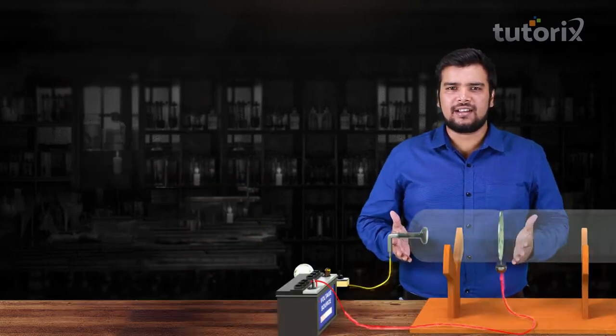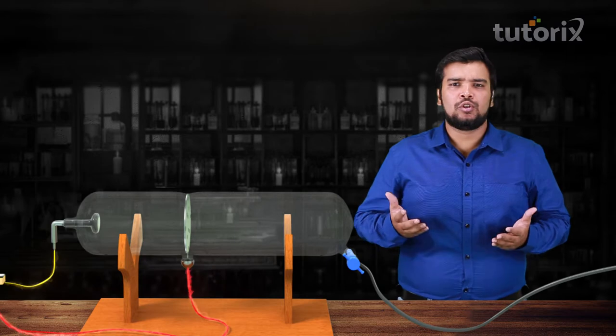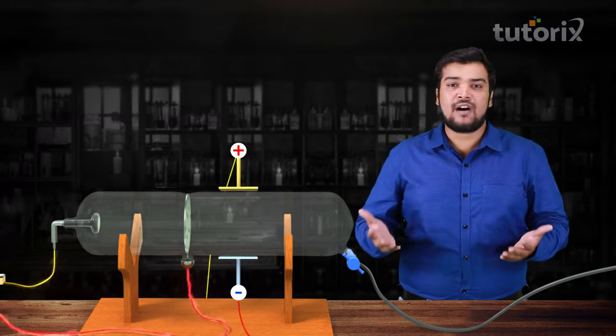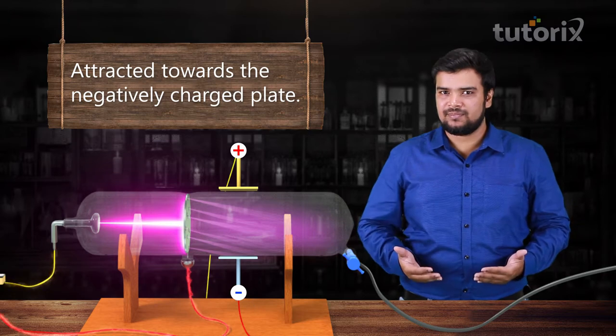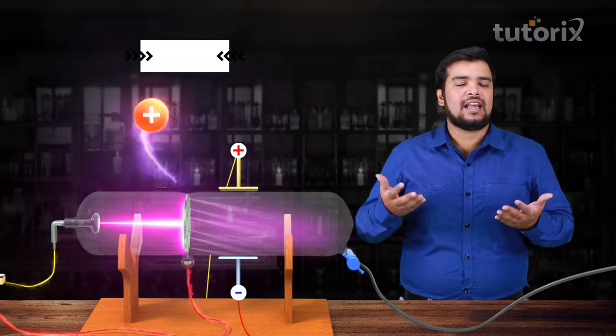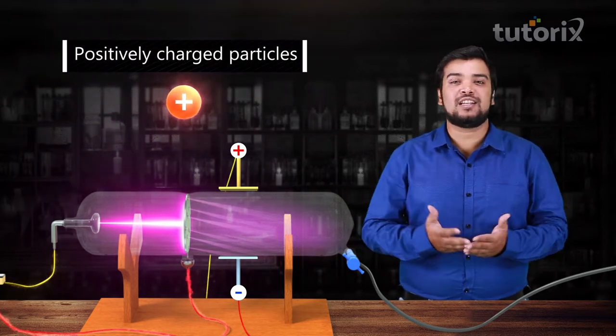So to verify that, they passed these rays through two charged plates and found that these rays were attracted towards the negatively charged plate. That clearly tells us that these rays are made of positively charged particles.